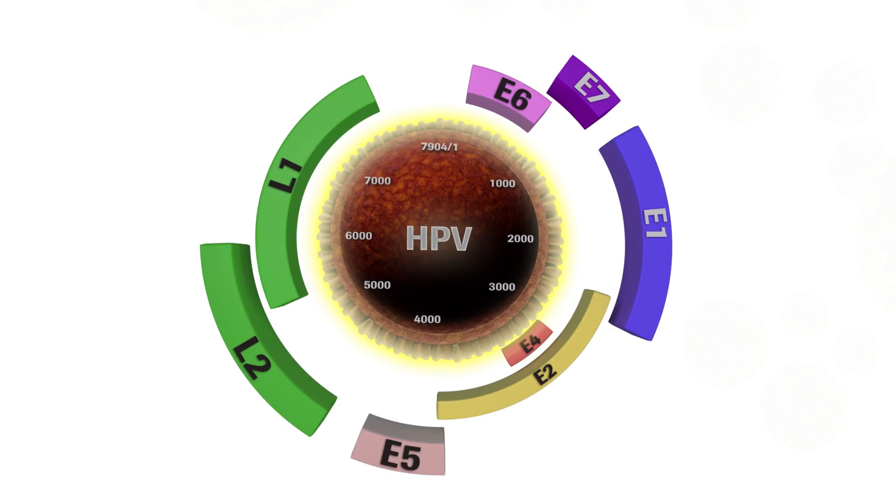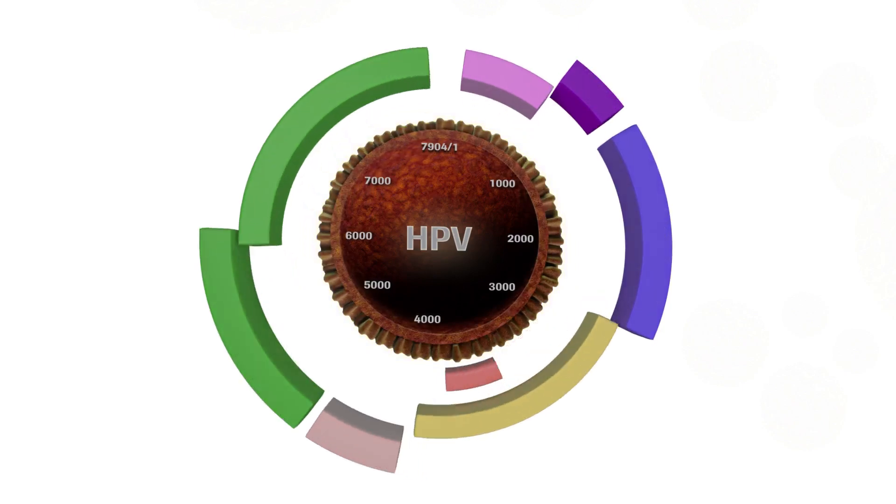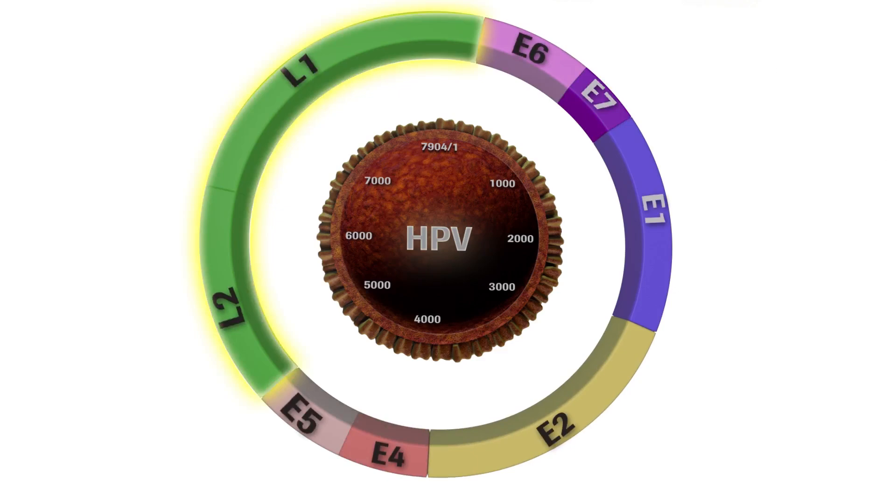This region contains a variety of elements which regulate viral replication and gene expression. The L1 and L2 genes encode the major and minor capsid proteins. Early genes regulate HPV viral replication.